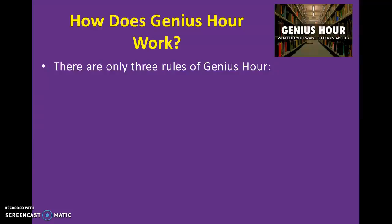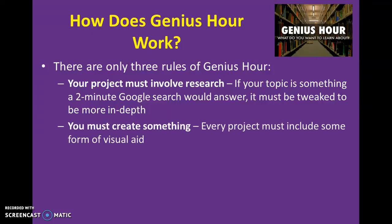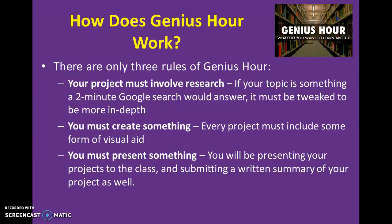So how does Genius Hour work? There are only three rules. First, your project has to involve research — if it's something we could find out in a quick Google search, we'll need to make it more in-depth. Second, you have to create something, so every project will have some sort of visual aid. And finally, you must present something — you'll present your project to the class and submit a written summary showing what you found in your research.